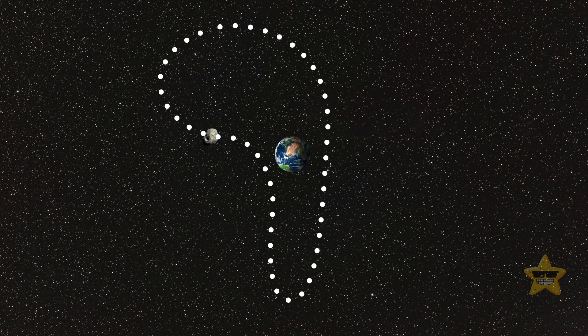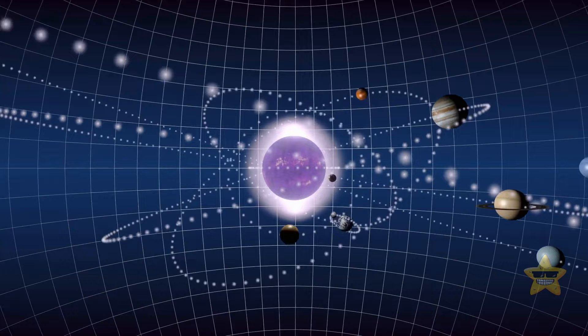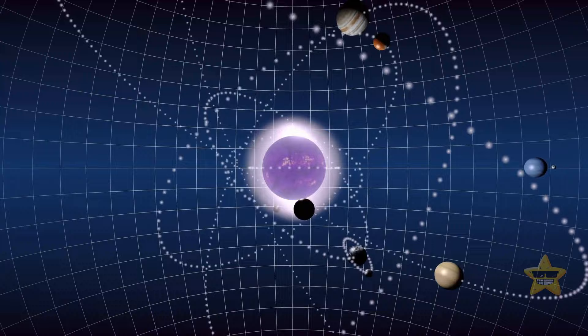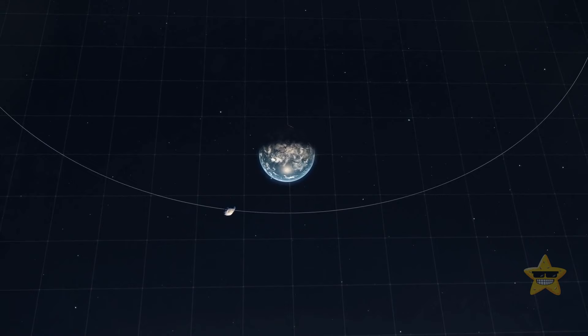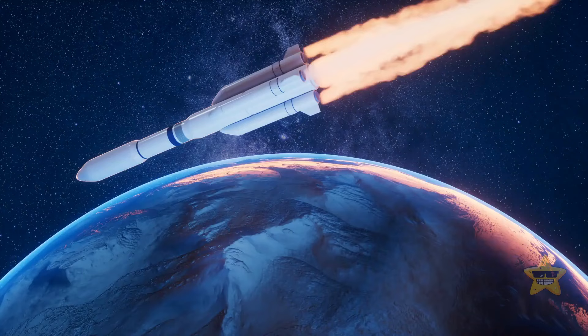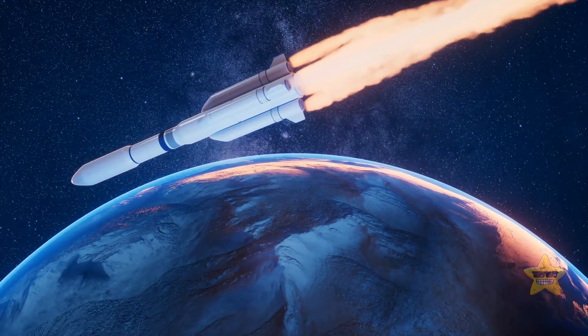Scientists love quasi-moons because they present great research possibilities. Their interesting orbits make them perfect for studying gravitational influences and the intricacies of space mechanics. Plus, they're usually close to their parent planets, which can also offer insights into the formation and evolution of planetary systems. And who knows, maybe at one point in the future, they'll help us with space exploration.